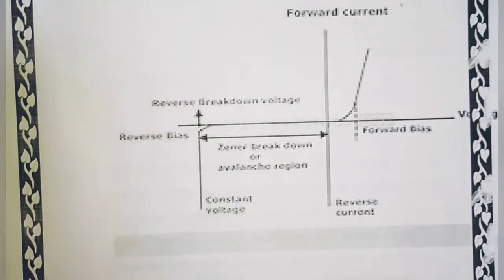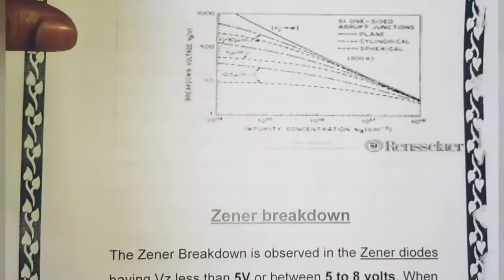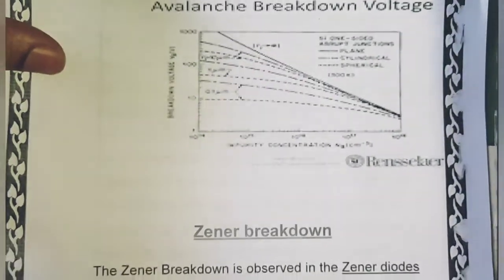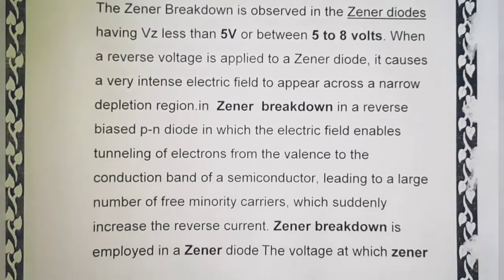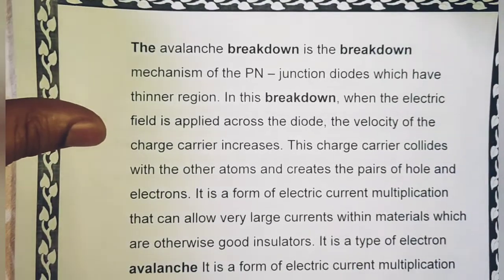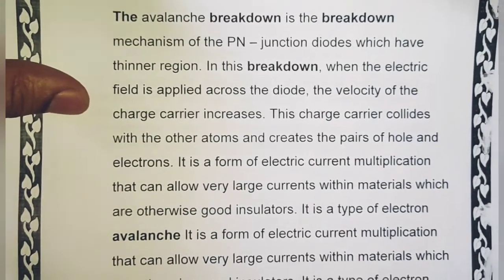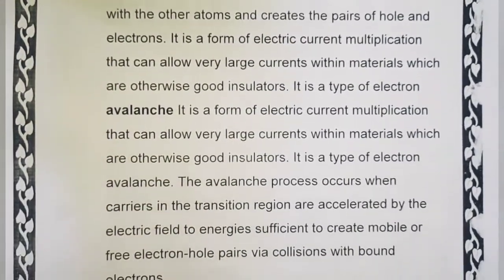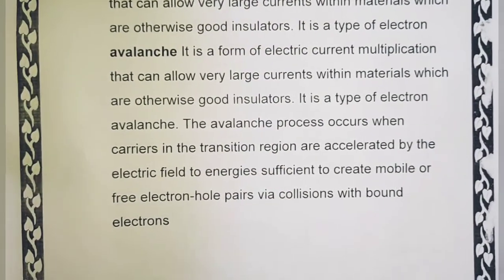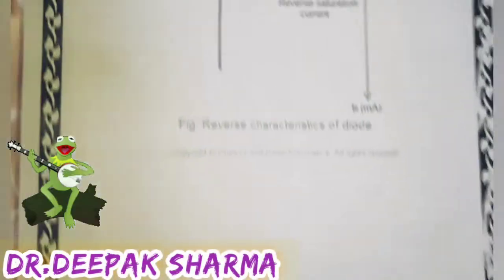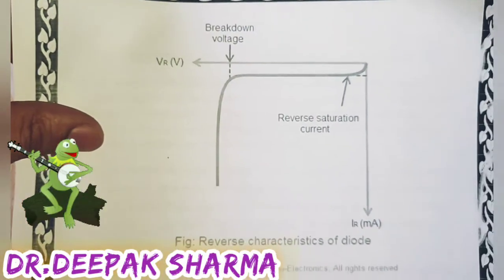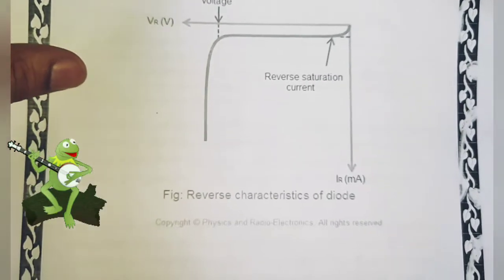Next page में breakdown voltage है — काफी complicated है। Zener breakdown के बारे में काफी detail में बताया गया है। Next page में एक और picture — reverse characteristics of diode बताया गया है।